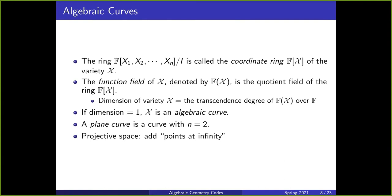Here we see the definition of the coordinate ring, and we define the function field of x as the quotient field of the coordinate ring. The dimension of a variety is the transcendence degree of its function field over F. If you know what the transcendence degree is, great; if not, you can think of a line as a one-dimensional curve in some space. We view algebraic curves as one-dimensional objects in a function field, and we can define plane curves as curves where n equals two. Projective space is where we take the affine space and include points at infinity. The constructions from now on will really be taking place in projective space.